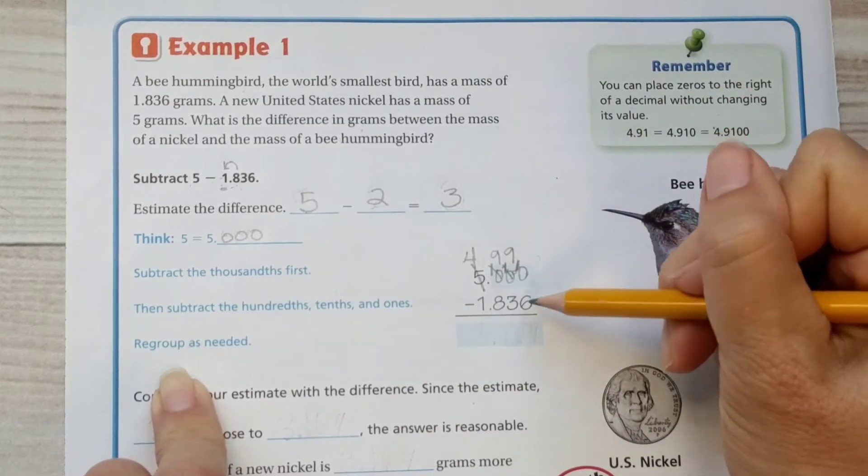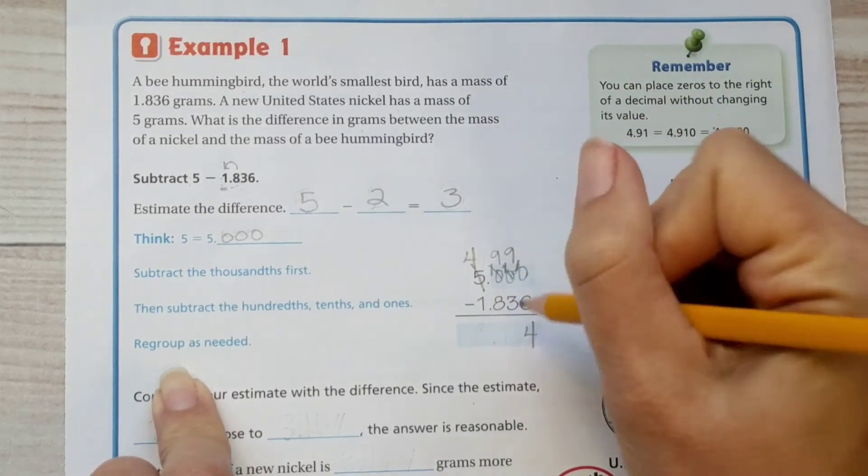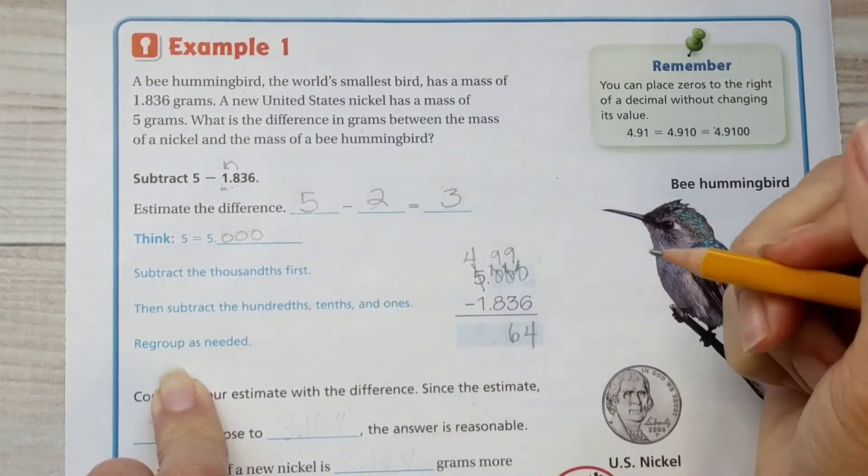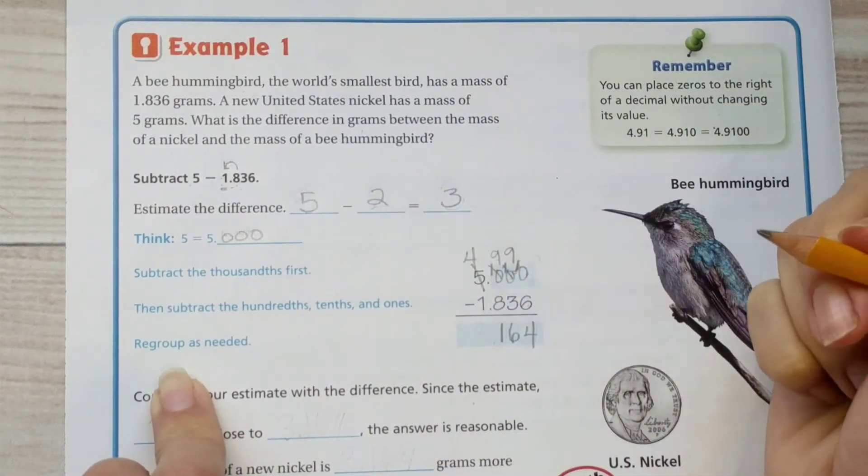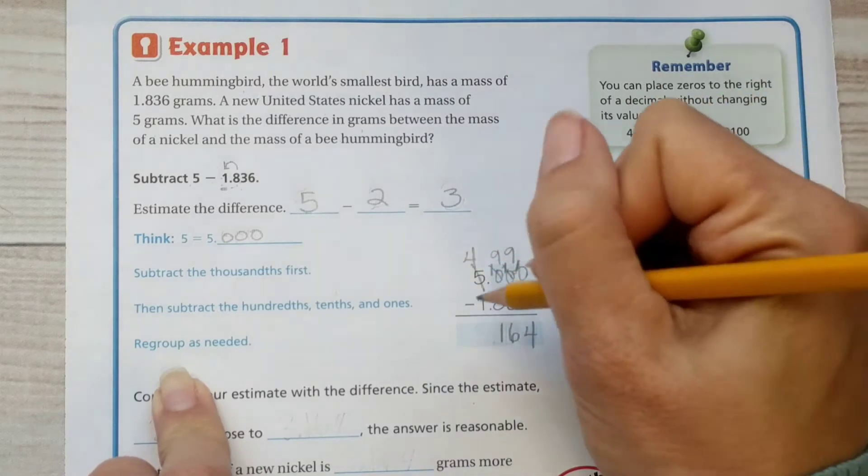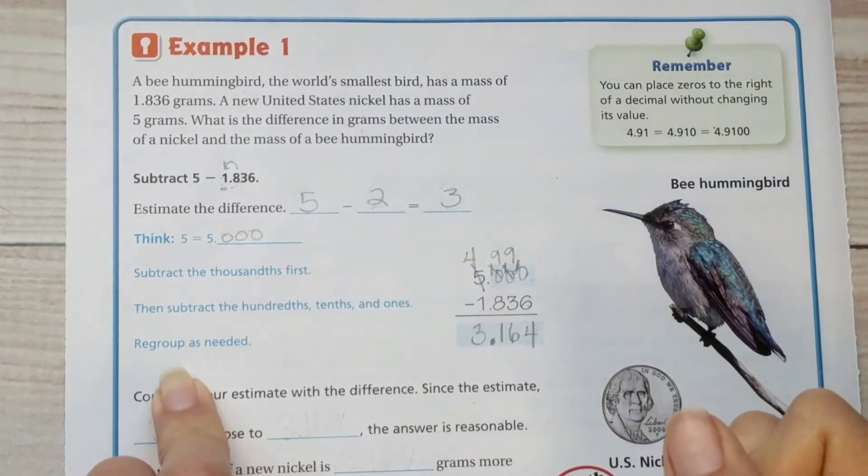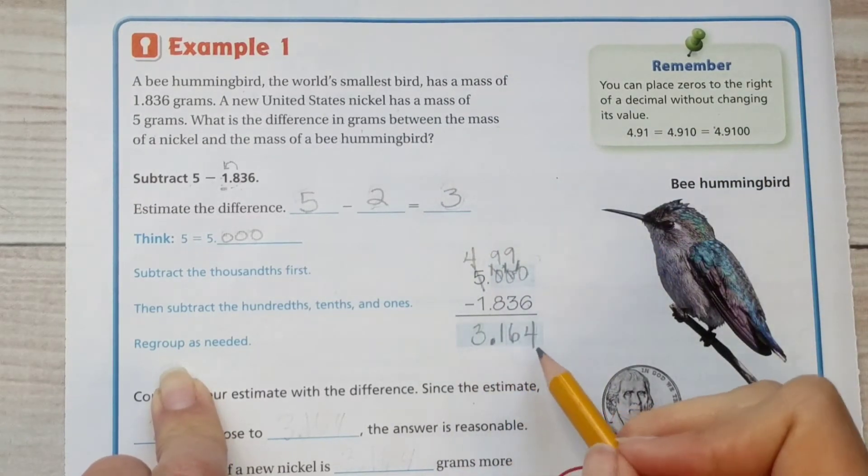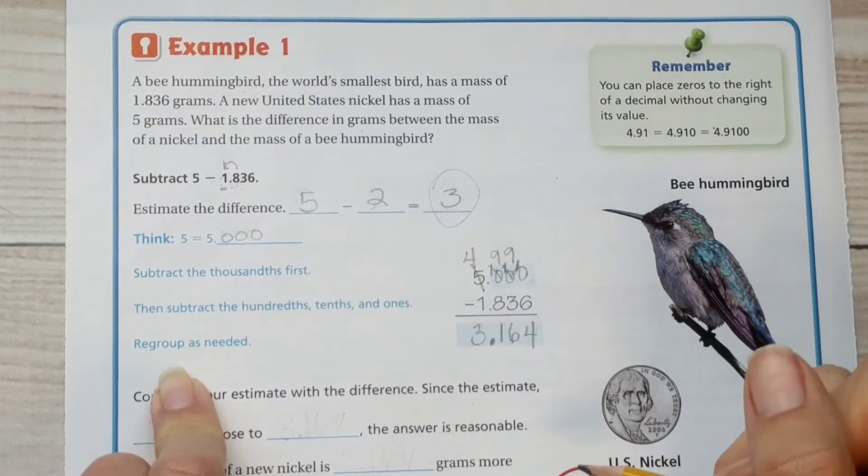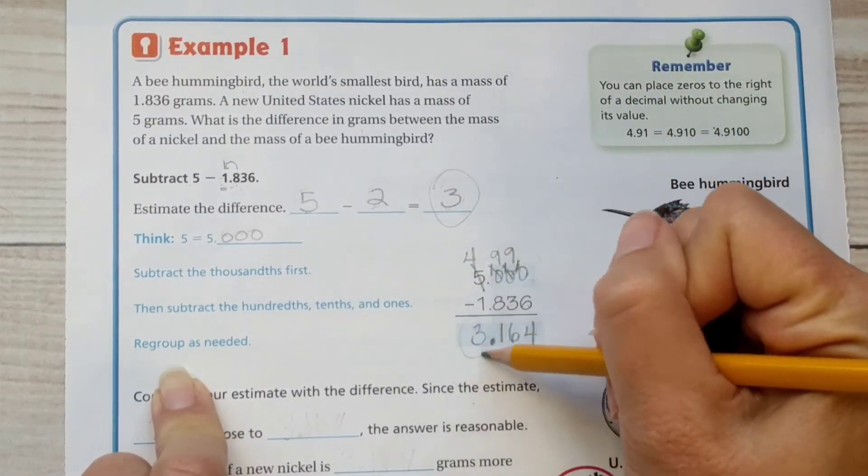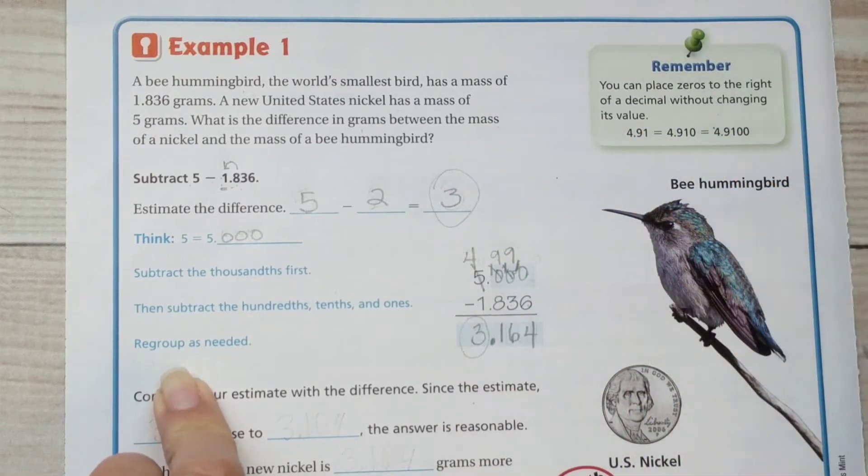So 10 take away 6 is 4. 9 take away 3 is 6. 9 take away 8 is 1. 4 take away 1 is 3. Bring that decimal straight down. So we have 3.164. Is that pretty close to our estimate at the beginning? Yes, it is, because it's pretty close to 3. So our answer is reasonable, so we're going to assume it's correct.